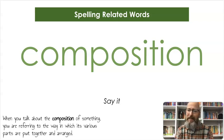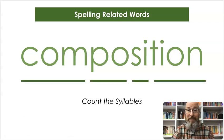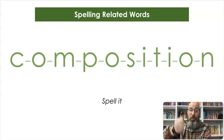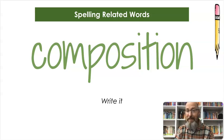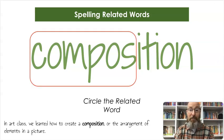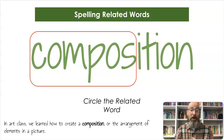The next word is composition. When you talk about the composition of something, you are referring to the way in which its various parts are put together and arranged. Let's count the syllables — com-po-si-tion, composition. Let's spell it: C-O-M-P-O-S-I-T-I-O-N, composition. And let's write it: C-O-M-P-O-S-I-T-I-O-N. We're going to circle the beginning: C-O-M-P-O-S, like the word compose, but it's composition — notice how it sounds a little different. In art class, we learned how to create a composition, or the arrangement of elements in a picture.